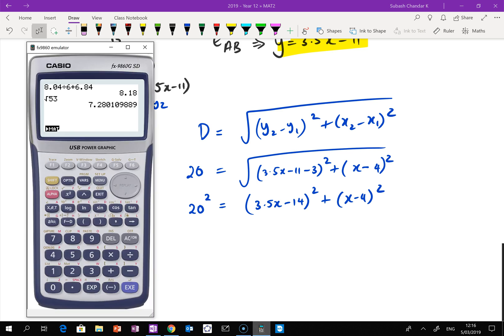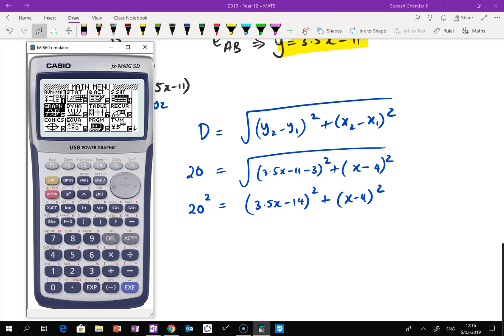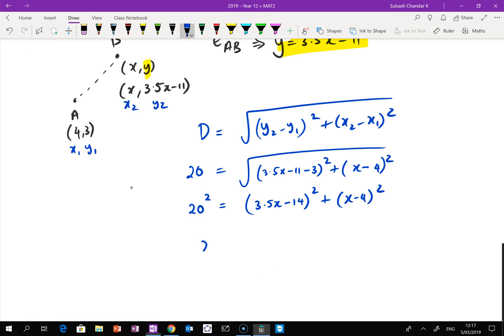So with the graphics calculator, go into menu, go into graph mode. So type in 20 squared first in the top line. And in the second line, type in the equation. So you've got (3.5x minus 14) squared plus (x minus 4) squared and we draw it. Now if you press G-solve and press intersect, it gives you your first x value, which is negative 1.49 and gives you your second x value, which is 9.49.